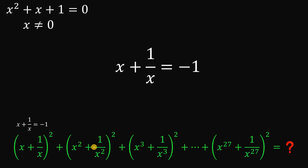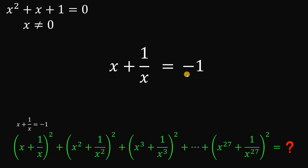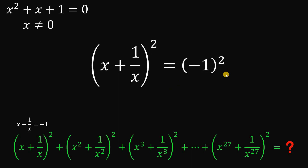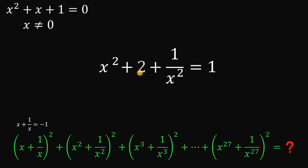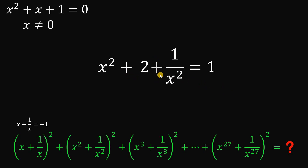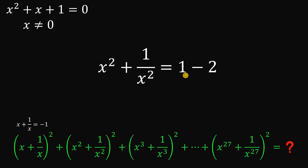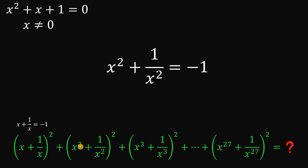Now, how about x² + 1/x²? We square x + 1/x = −1. Since (−1)² = 1, and expanding the left side gives x² + 2 + 1/x², we subtract 2 from both sides to get x² + 1/x² = 1 − 2 = −1. So x² + 1/x² is also −1.